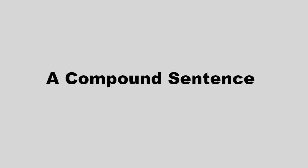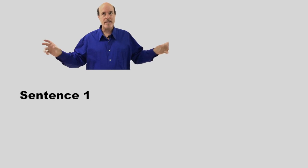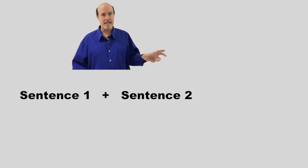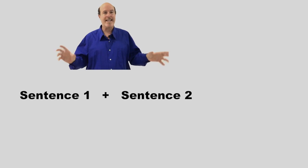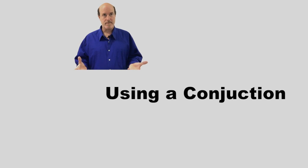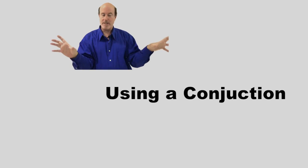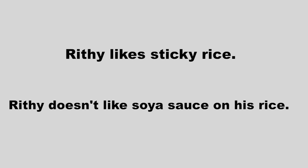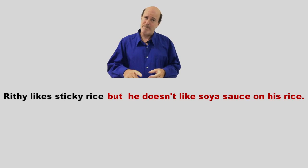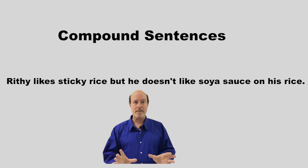So let's go on to the next type of sentence, which is a compound sentence. In Khmer: le ba psaam. All it's doing is joining two sentences together. You have what's called a clause — in Khmer, kliya — and you join two clauses together to make a sentence, using a conjunction. For example: Riti likes sticky rice. Riti doesn't like soy sauce on his rice. Join them together: Riti likes sticky rice, but he doesn't like soy sauce on his rice. That's a compound sentence.